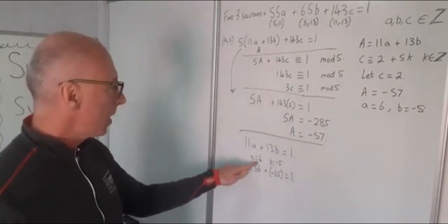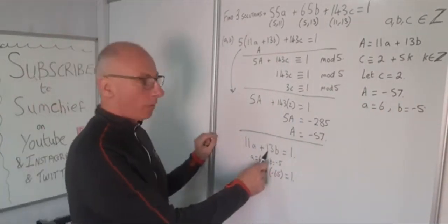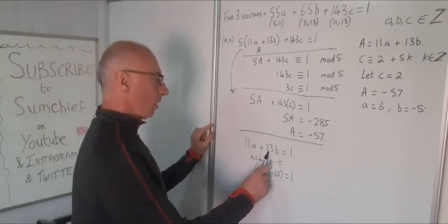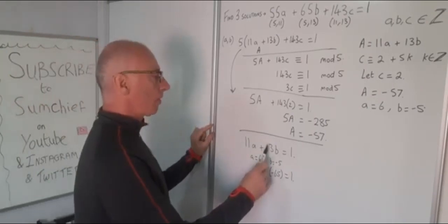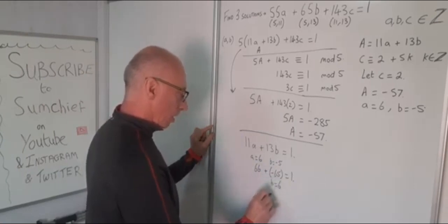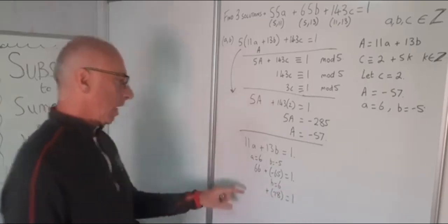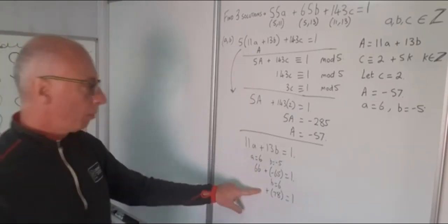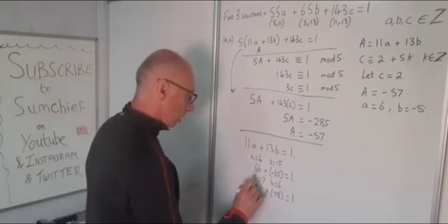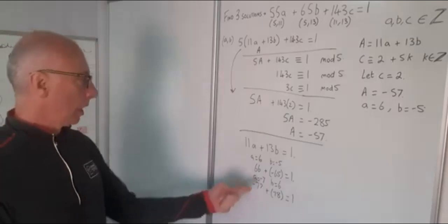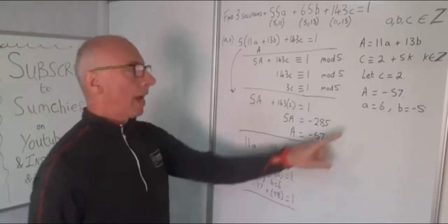Another possible solution is for a negative A. I can look for multiples of 13 which are one more than a multiple of 11. So going through 13, 26, 39, 52, 65, 78 — if I put B equals 6, that gives me plus 78, and then for A I'm looking for 77, which means A equals minus 7. So minus 77 plus 78 equals 1. So that takes care of A and B.